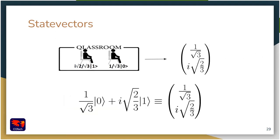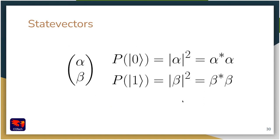Instead of writing the column vector, we could write the state as a sum — the probability amplitude times the basis state ket vector corresponding to that amplitude. Both notations are equivalent and you can use whichever you prefer. To recap: the state of our quantum system is described by a column vector or the sum notation, and to retrieve the probability of measuring each state, we calculate the squared modulus.